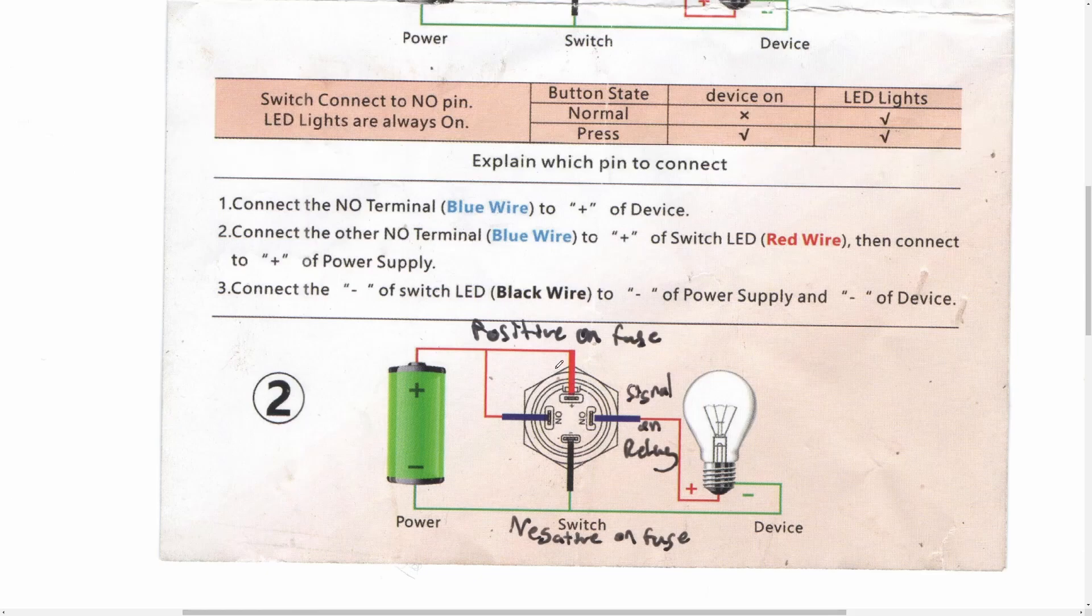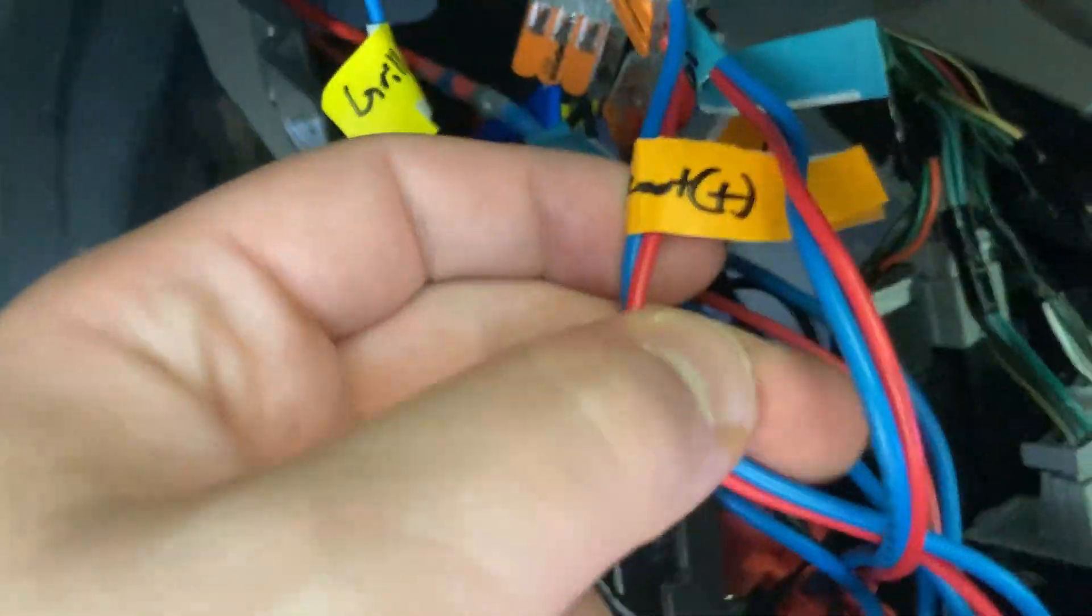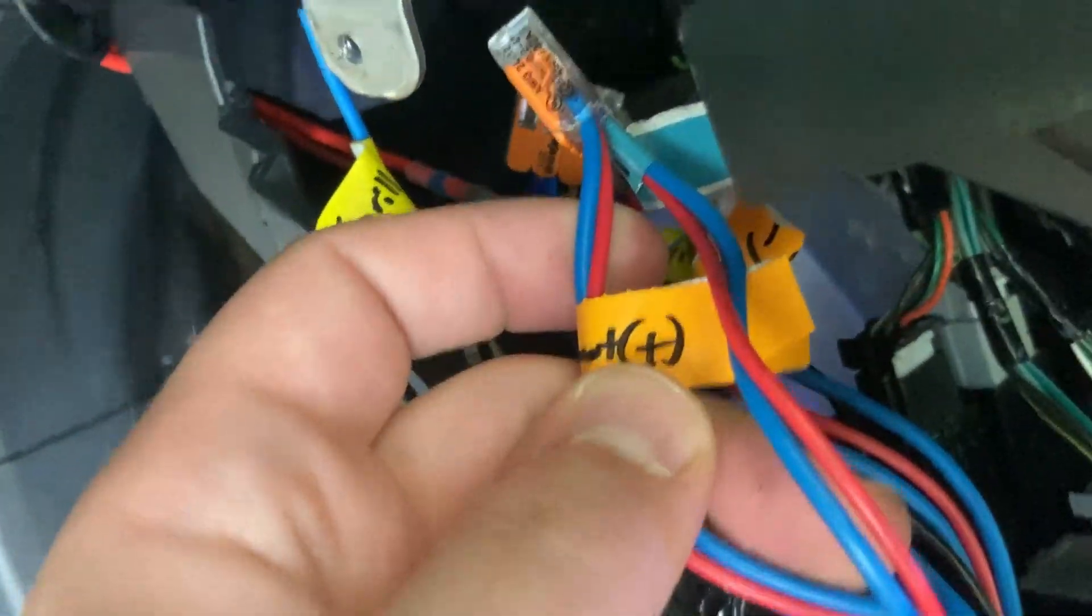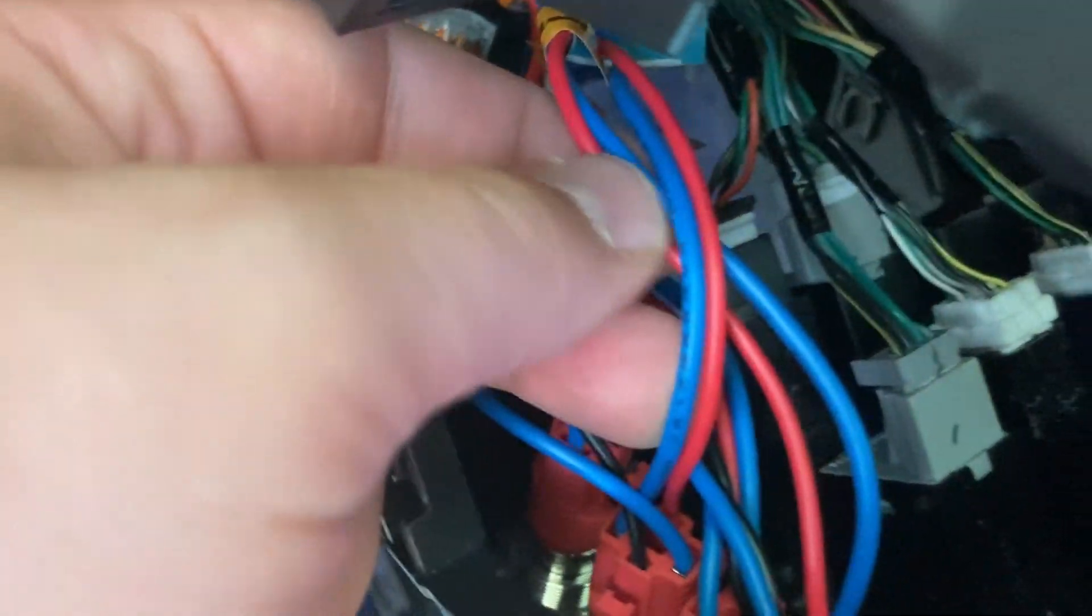So again, we have a positive indicator on the switch and a negative indicator on the switch. In this case, your positive on the switch and the normally open wire to the counterclockwise of the positive is going to the add-a-fuse on the fuse panel.